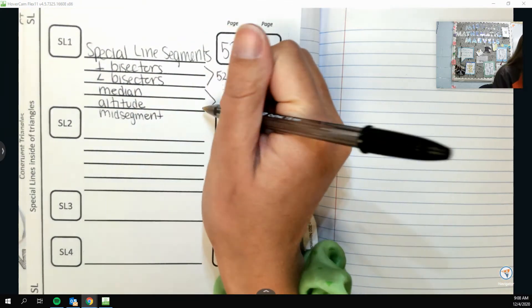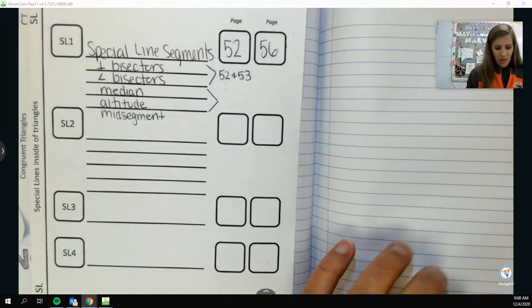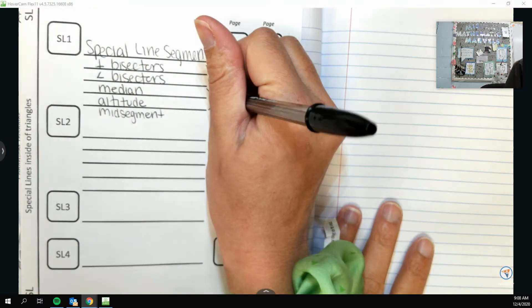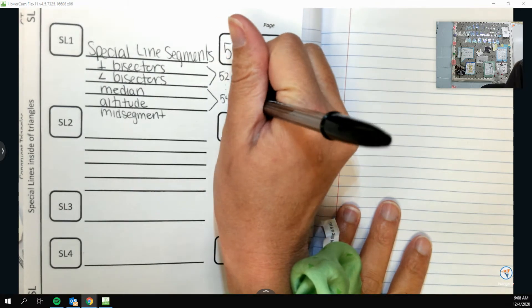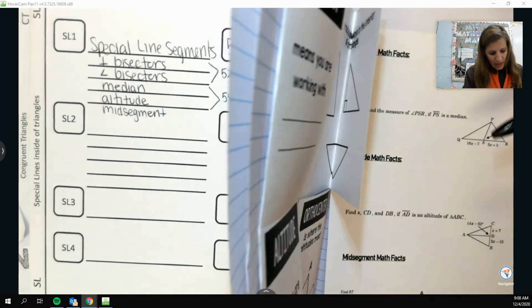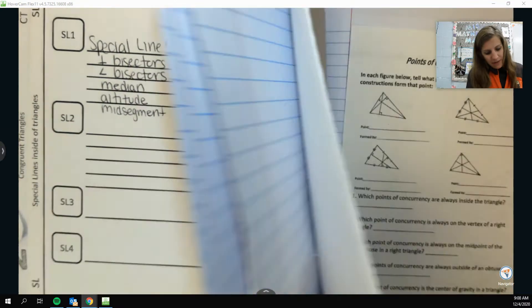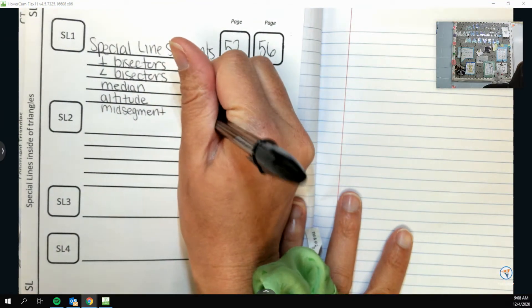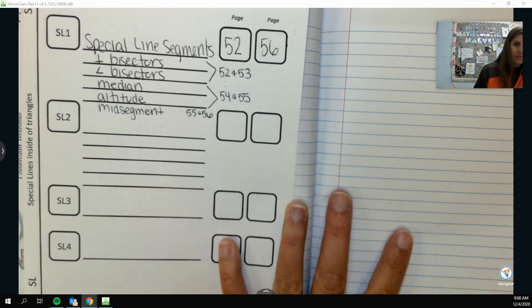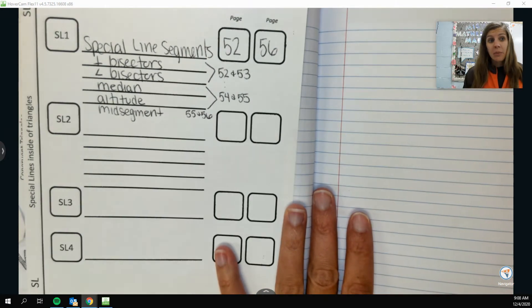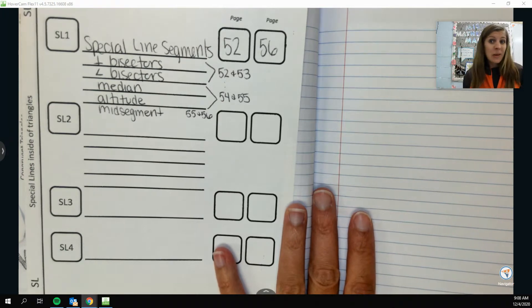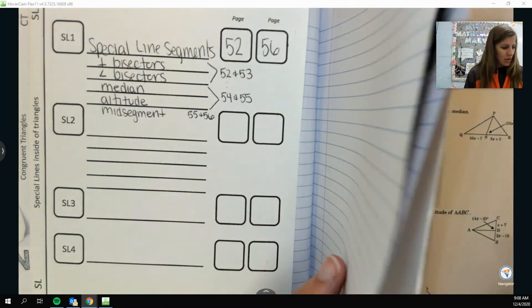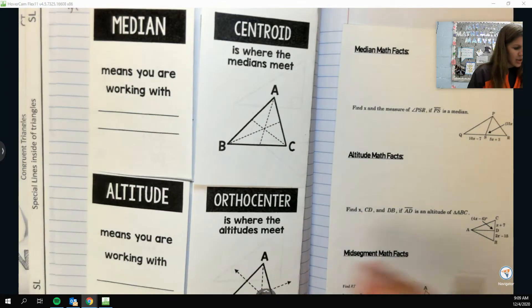Now, median and altitude, these ones are going to be on pages 54 and 55. And I think the only—oh well, mid segment is on 55 and then I think a little bit on 56, so we'll do 55 and 56 right there. Now, these ones are all new, like perpendicular angle bisectors we had kind of talked about before, but these ones I don't think we've talked about at all yet. So yeah, let's turn to page 54.